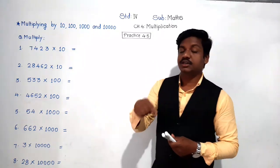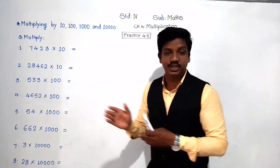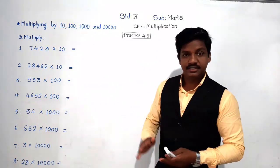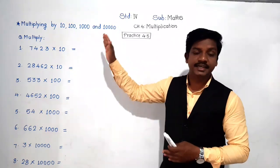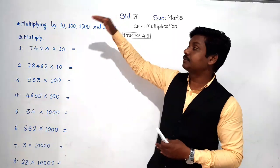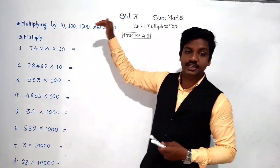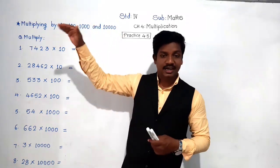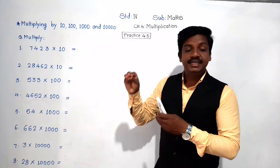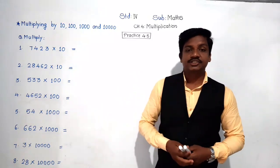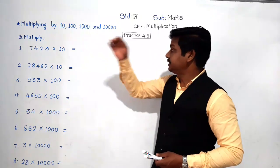It's very easy and we don't have to multiply traditionally step by step. We can directly get the answer when multiplying by ten, hundred, one thousand, or ten thousand. We get the answer directly within a fraction of a minute.